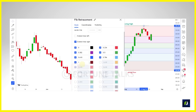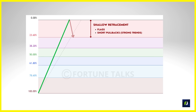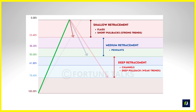Based on depth of retracement levels: a 23.6% retracement is considered relatively shallow, appropriate for flag patterns or short pullbacks in strong trends. Retracements in the 38.2% to 50% range are considered moderate, appropriate for pennant chart patterns. Even deeper, the 61.8% retracement is referred to as the golden retracement based on the golden ratio — these deep pullbacks usually occur in weak trends where corrective moves are more visible, similar to what we find in channel patterns.